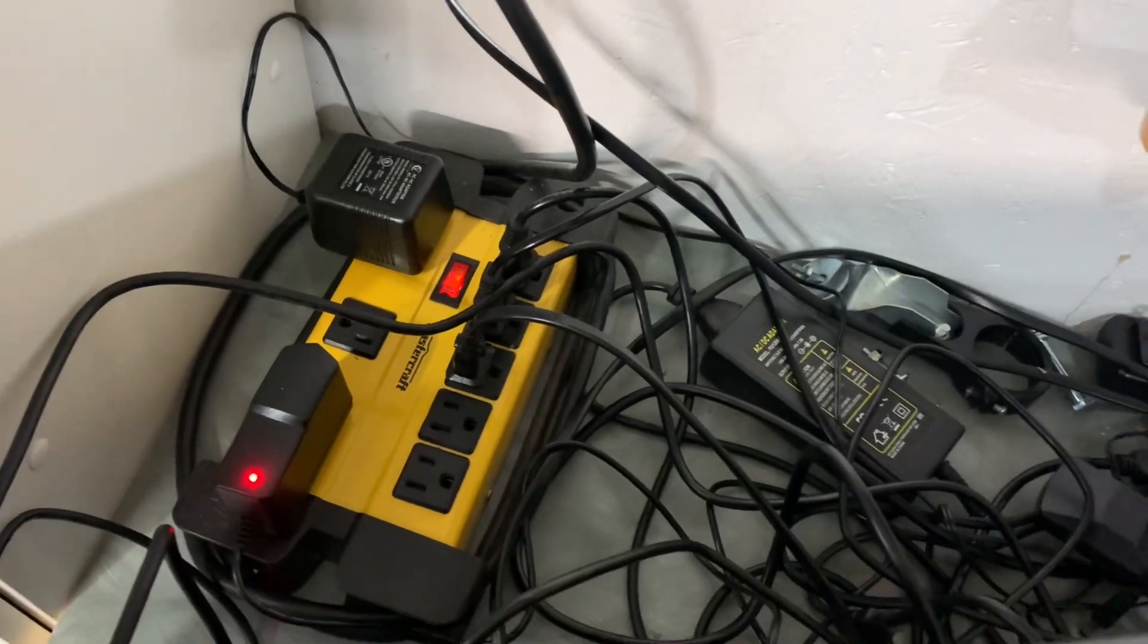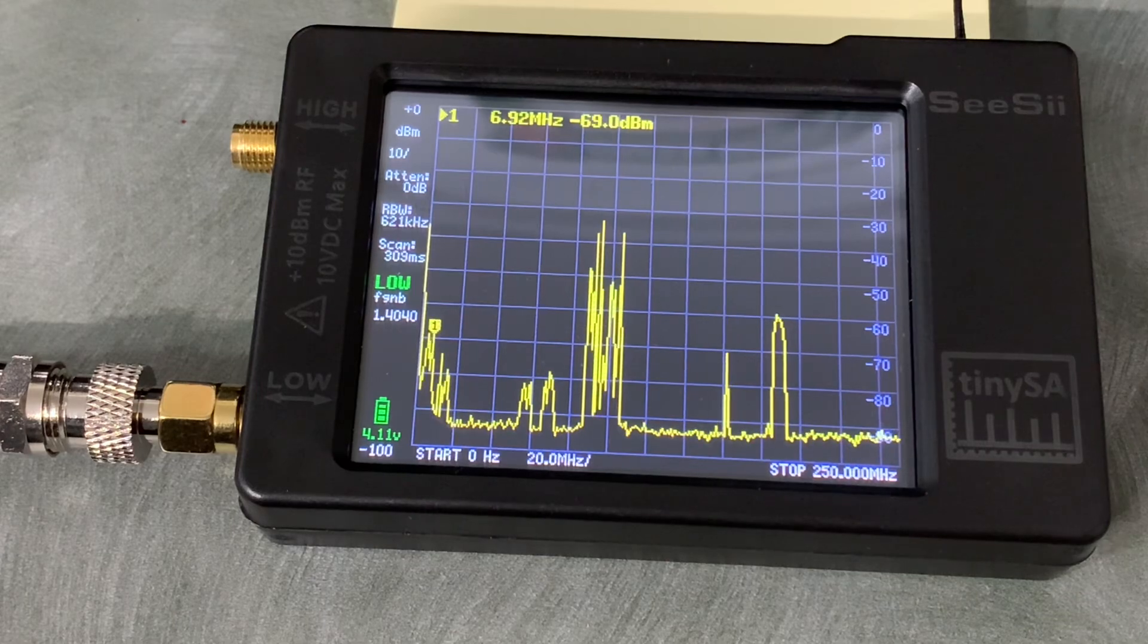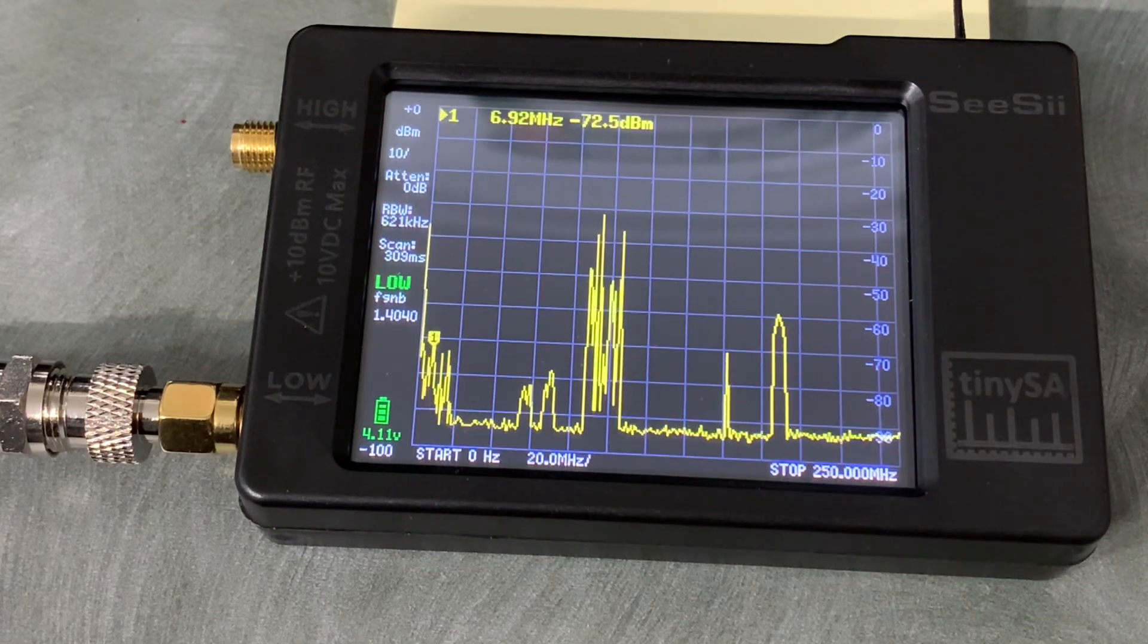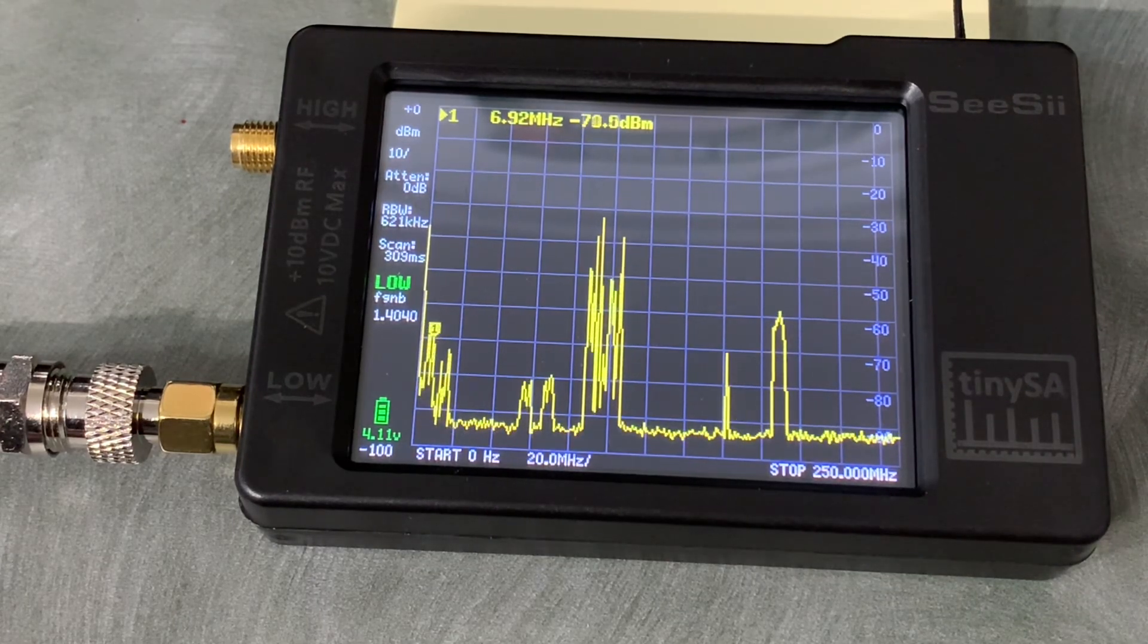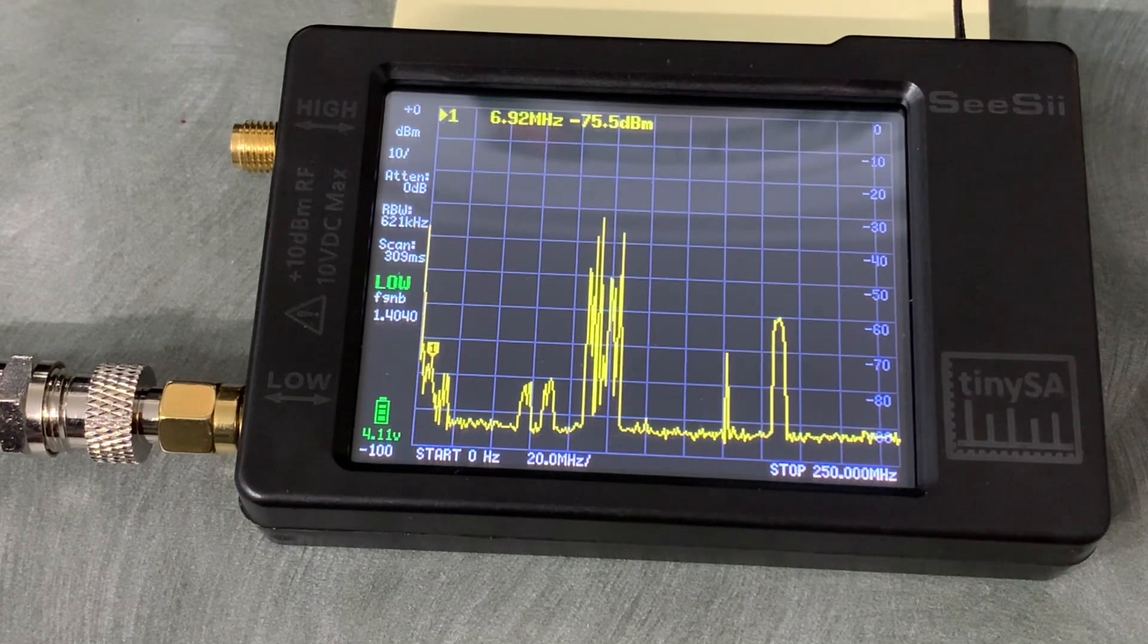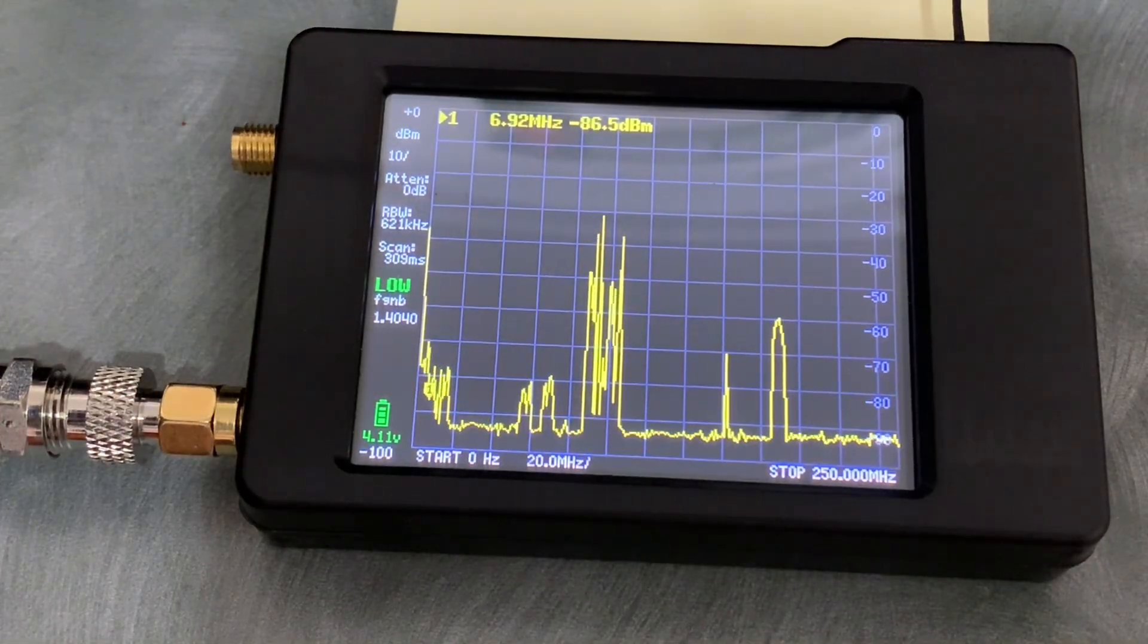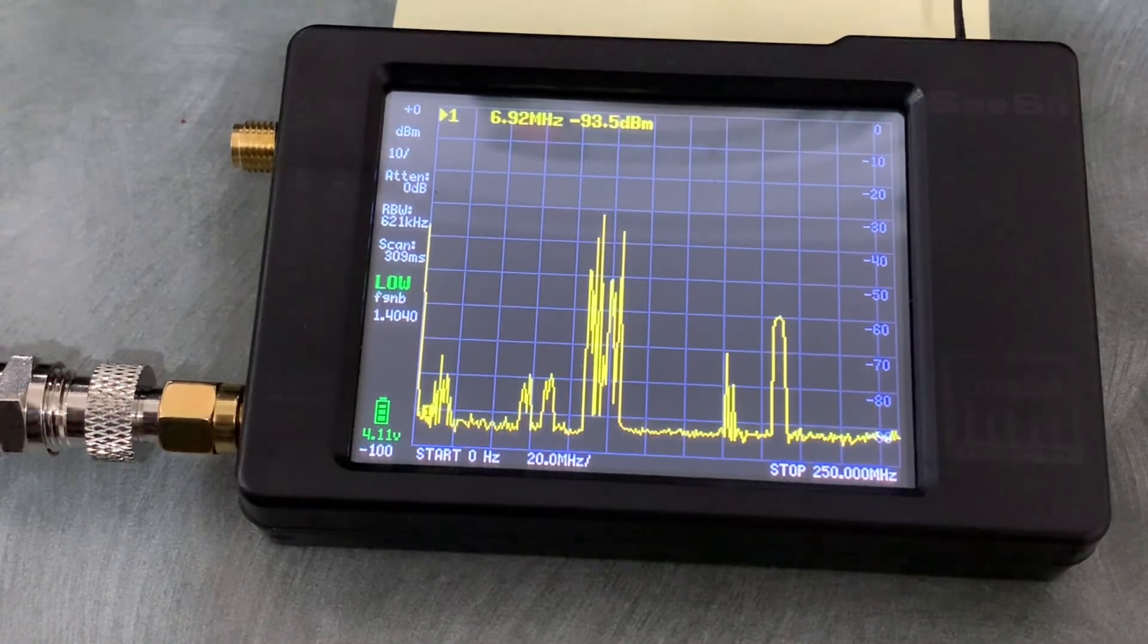I've got a bunch of digital converter boxes and satellite receivers and other stuff connected to a power bar, and all of those external power supplies generate some RF noise. If I go over here and switch the power bar off, you can see that a lot of that seems to calm down.